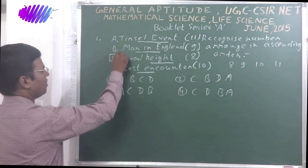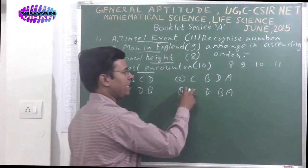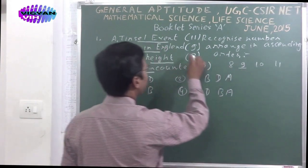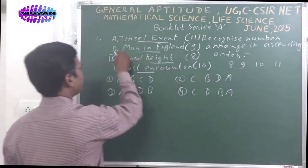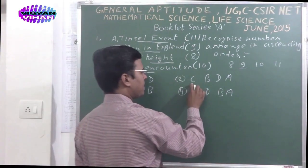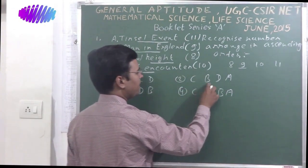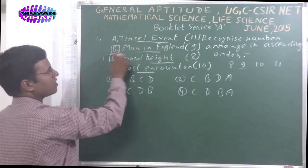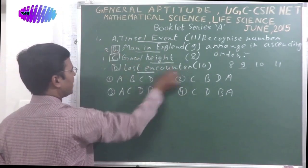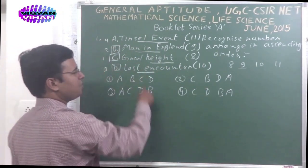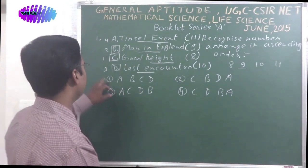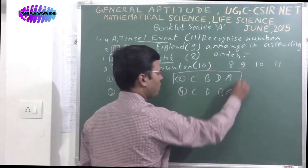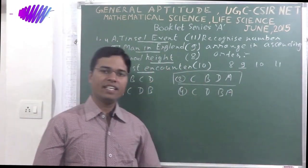So first 8, so C. The first letter must be C. So option 2 or 4 may be correct. The second 9 is here, Men in England, that is B. Then B after C. So C, B. Then 10, D. You can write here the order: 1, then 2, then 3, then 4. Then you can read it easily: C, B, D, A. So the correct answer of this problem is option number 2: C, B, D, A.